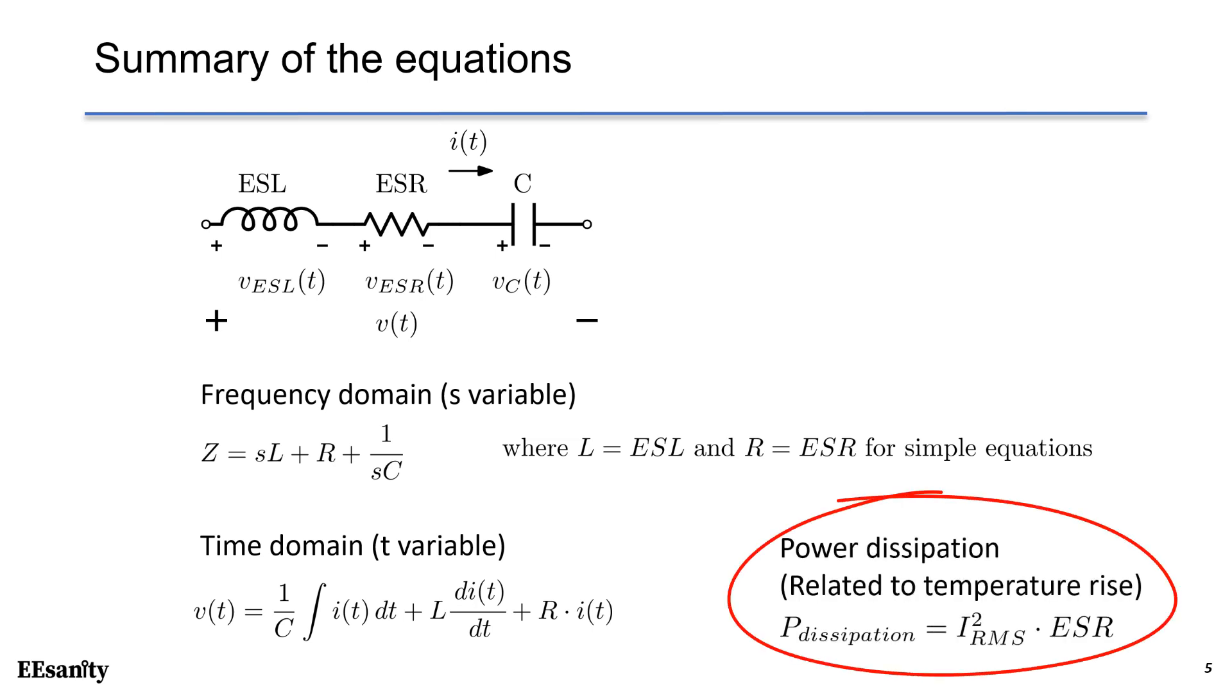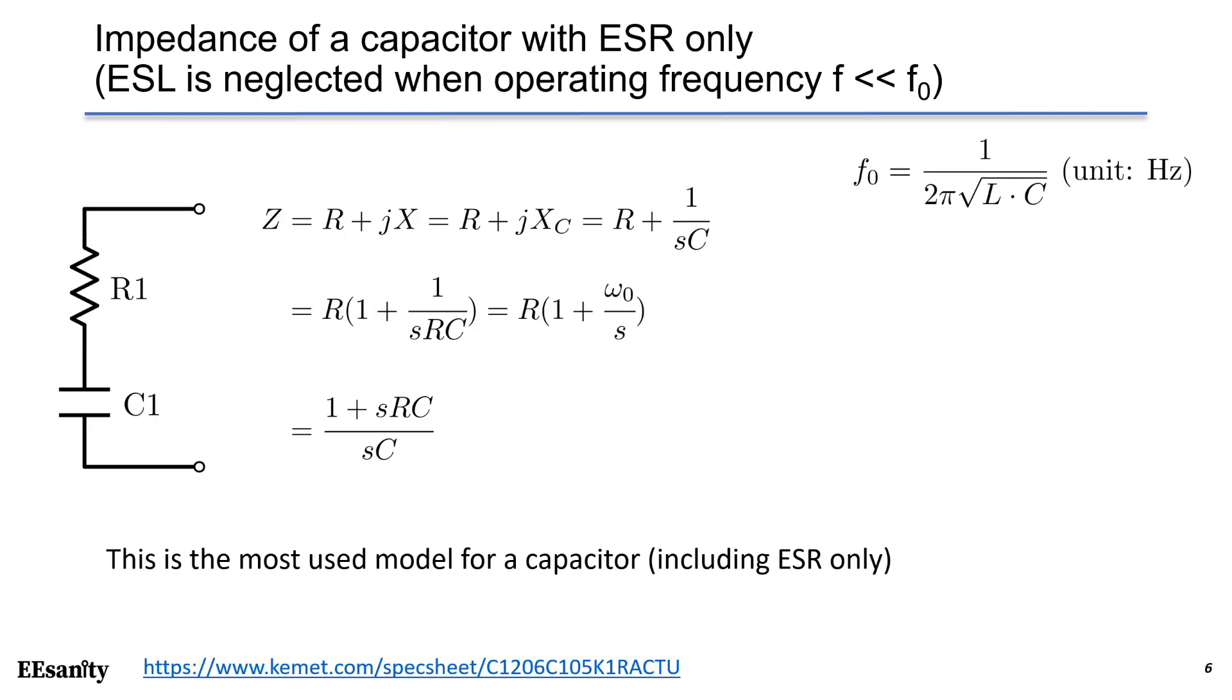Power dissipation is calculated as the capacitor RMS current squared times the ESR. The power dissipation is directly related to the temperature rise over the capacitor. For example, if the ESR of a capacitor is very large, the allowed RMS ripple current must be small, so that the overall power dissipation is within the limit. Generally, that means a capacitor with large ESR cannot handle large ripple current.